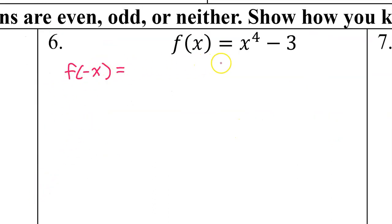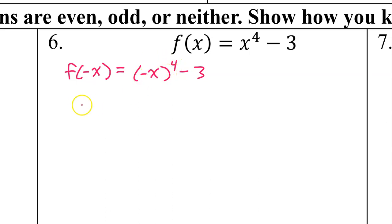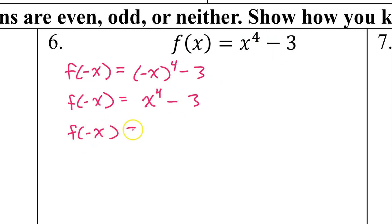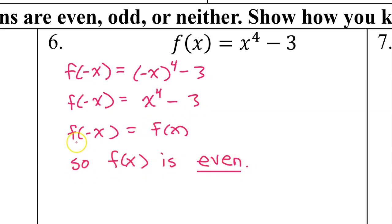Let's go back and redo number 6 as a proof. We always start by plugging in negative x, so f of negative x gives us negative x to the fourth power minus 3. When you raise negative x to an even power, the negative goes away. So this gives us x to the fourth power minus 3, which is the same as the original function. In other words, f of negative x is equal to f of x, so f of x is even.